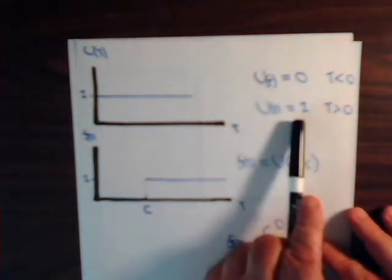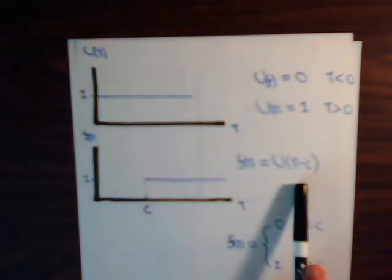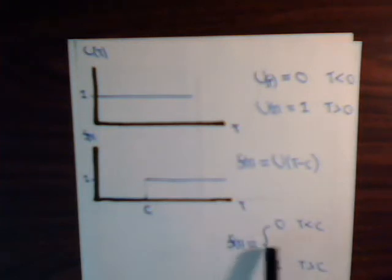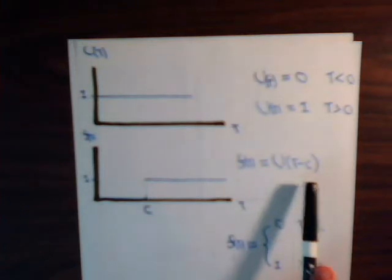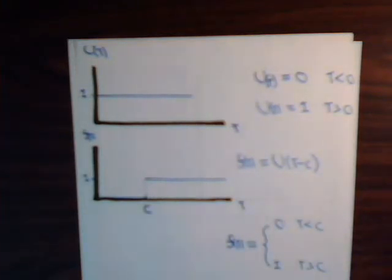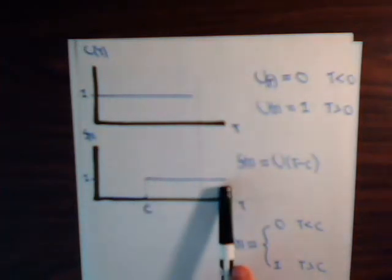So if we have u of t minus c, well if t is less than c, what's inside of here is a negative quantity. So that is going to then be zero. Once t is greater than c, this is a positive quantity, that's going to be one. So the step function of t minus c has this graph. Once t gets past the value of c, it equals one. Before that, it equals zero. So it's a pretty simple concept really.